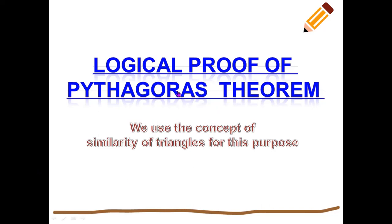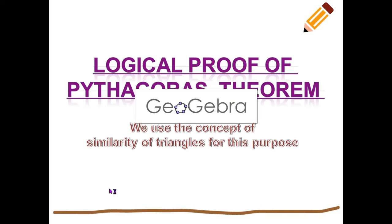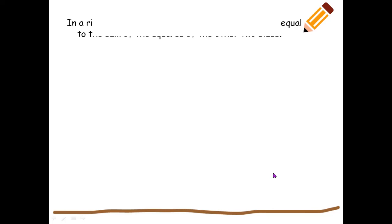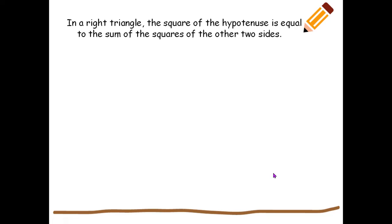Logical proof. How do you prove it logically? We have triangle ABC right-angled at B. To prove Pythagoras theorem logically, we draw BD perpendicular to AC. BD divides triangle ABC into two right triangles, each of which is similar to the bigger triangle ABC. For proving the theorem we need five parts: the statement, the figure, what is given, what is to be proved, and the construction.